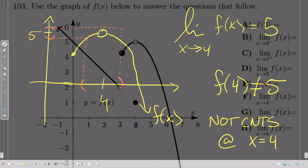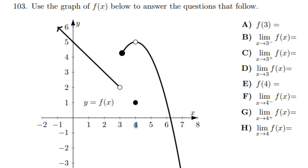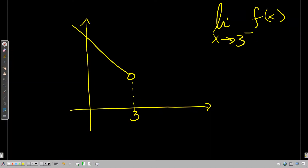Looking at the same picture, let's do question b: find the limit as x → 3 from the left. The graph looks like a line with a hole at the end right above x = 3. The y-coordinate of that hole is 2. Here's my sketch of this function f(x).